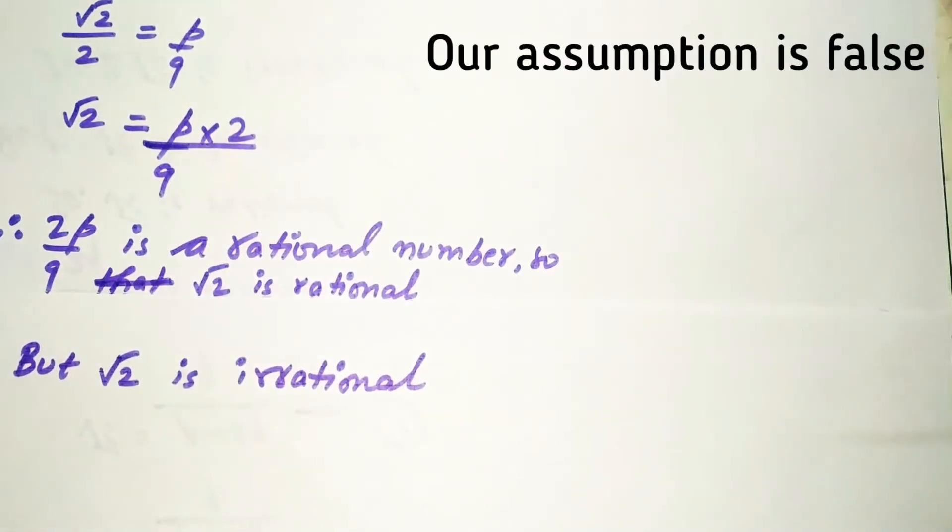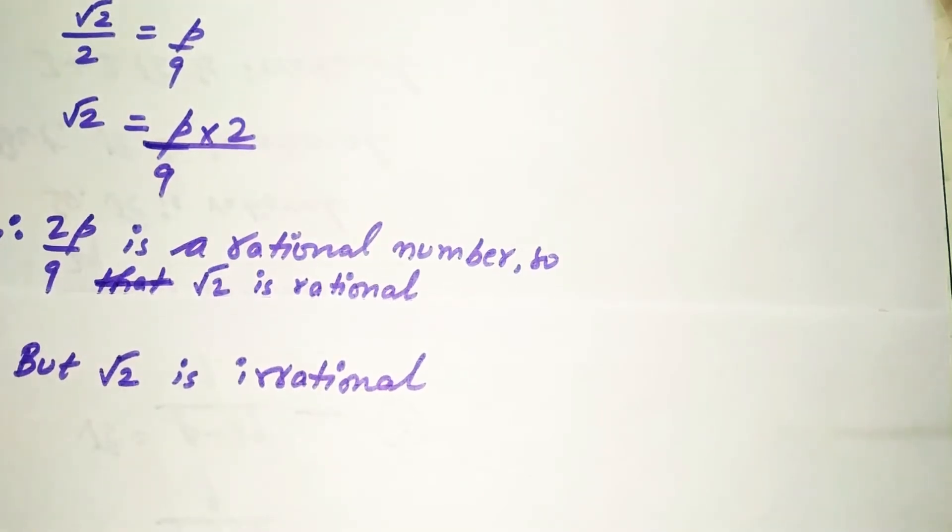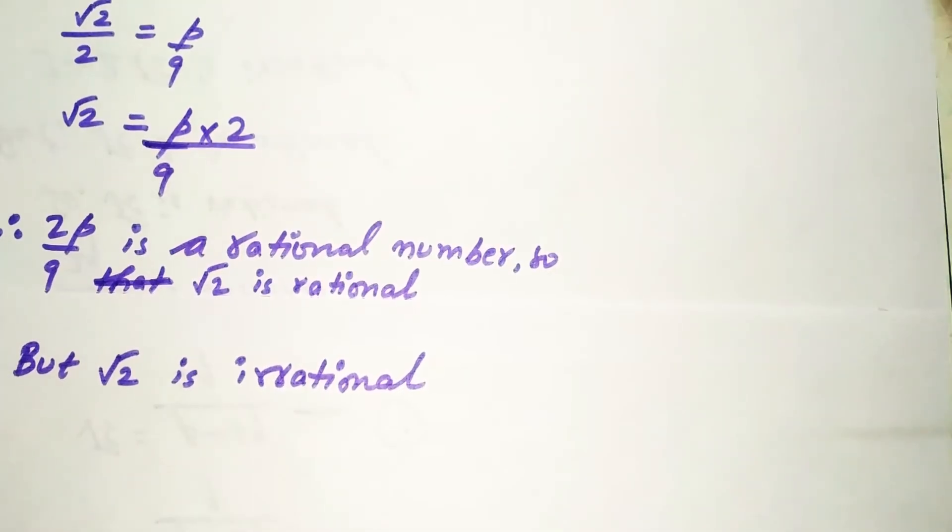And so our assumption that 1 by root 2 is rational is incorrect. And there we come to an end of the question.